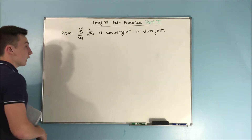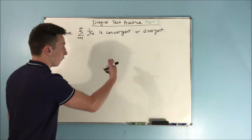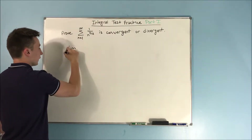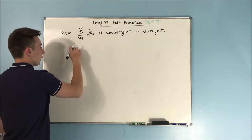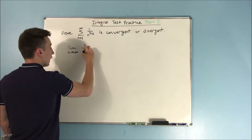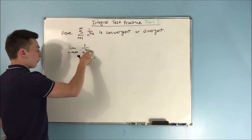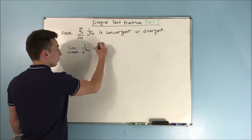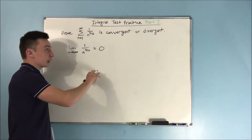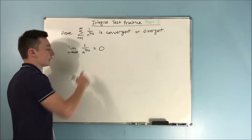Before we get started, we have to do the first test, which is the test for divergence. So we take the limit as n approaches infinity of one over n to the three halves. As n approaches infinity, this will get bigger and bigger, so this thing will go to zero. So the test for divergence is not going to prove that this is divergent, because the limit is equal to zero.